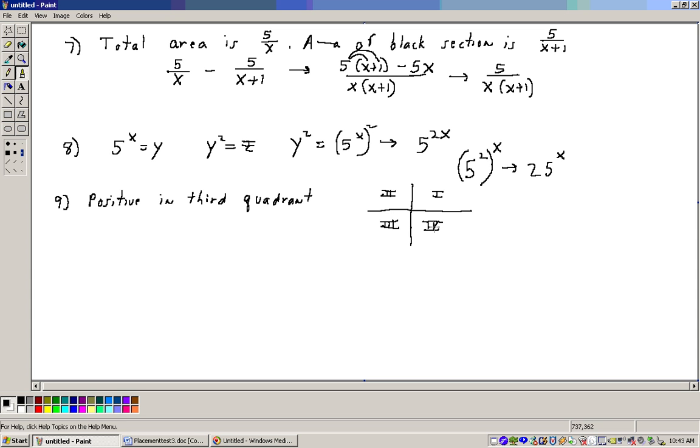When you think sine, well, sine is, think of your y values. So that would be positive in the first and second quadrant, not the third. When you think cosine, think x. And x is positive in the first and fourth. Now, cotangent and tangent are both positive in the first and third. And the question is, which is positive in the third quadrant? Out of all those choices, the only one that is, is cotangent, which is choice A.